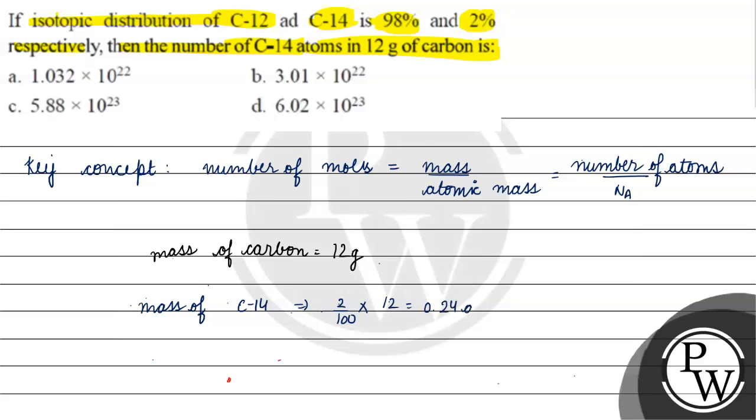Now what have we got? Mass by atomic mass for C-14, 14 grams per mole, into what?